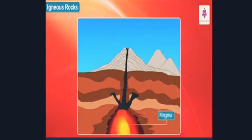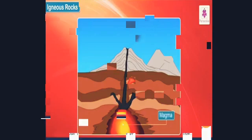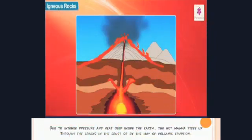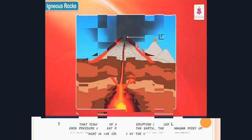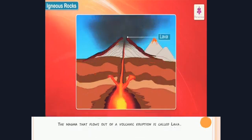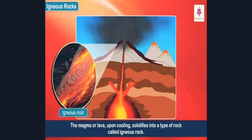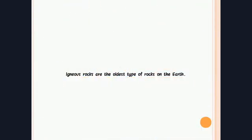Igneous rocks. The interior of the earth is very hot and is filled with a molten and semi-molten rock mixture called magma. This hot magma pours out through cracks or by way of a volcanic eruption due to intense heat and pressure deep inside the earth. The magma that flows out of a volcanic eruption is called lava. When molten magma or lava cools down and solidifies, it forms igneous rocks. Igneous means fire formed, and igneous rocks are the oldest type of rocks on the earth.